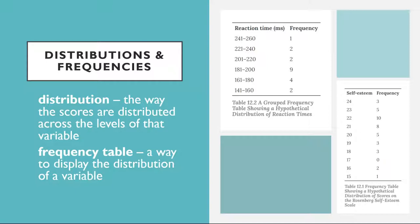This table shows that there were three students who had a self-esteem score of 24, five who had self-esteem scores of 23, and so on. From a frequency table like this, one can quickly see several important aspects of a distribution, including the range of scores from 15 to 24, the most and least common scores — 22 and 17 respectively — and any extreme scores that stand out from the rest.